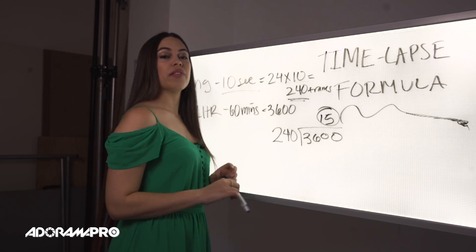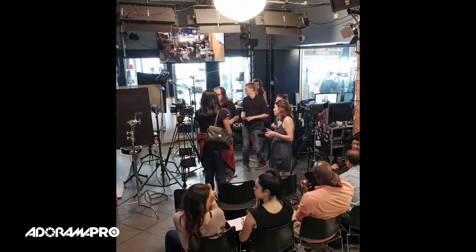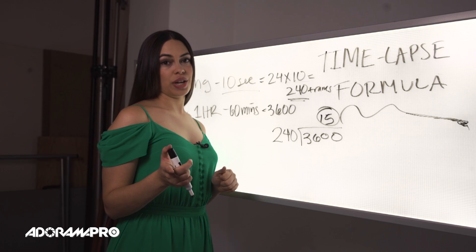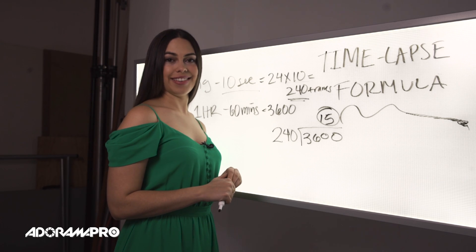In conclusion, you'll need to set your intervals at 15 seconds to get a 10-second video from a one-hour event. Thank you for watching — please subscribe to our YouTube channel and we'll see you again on set.